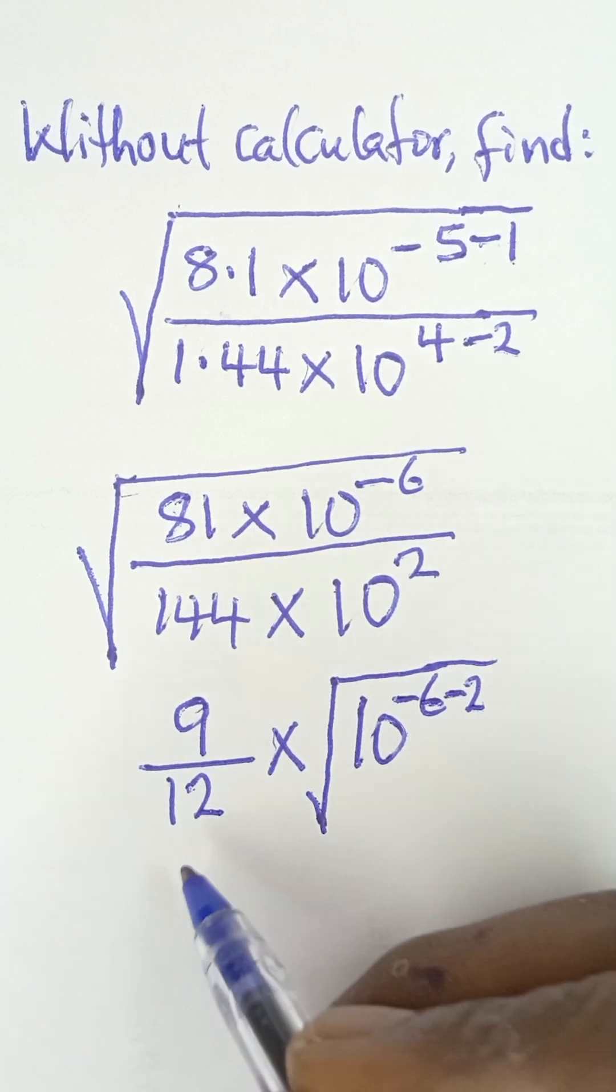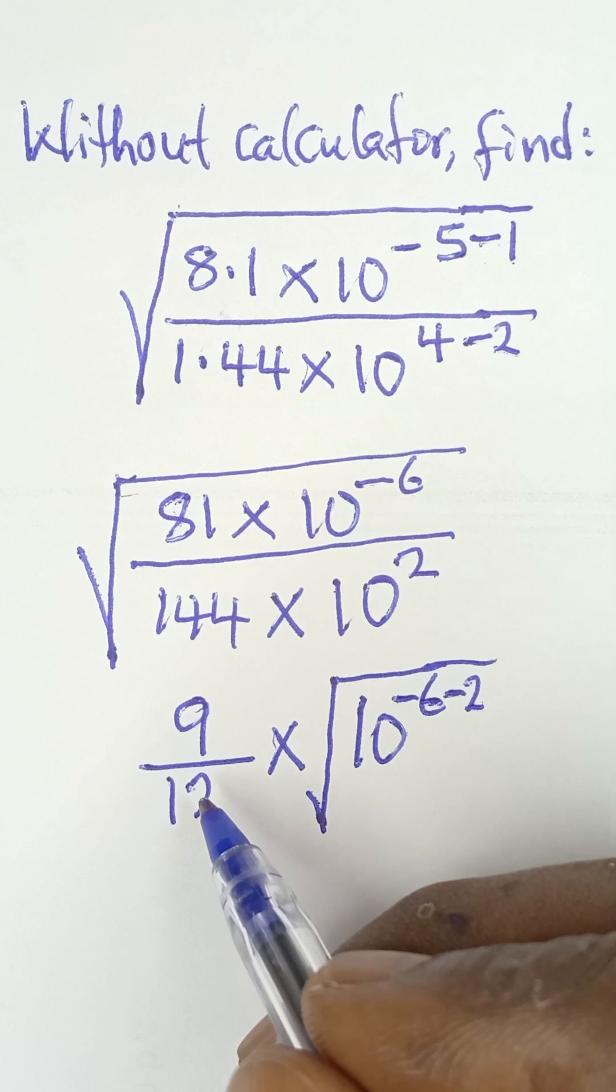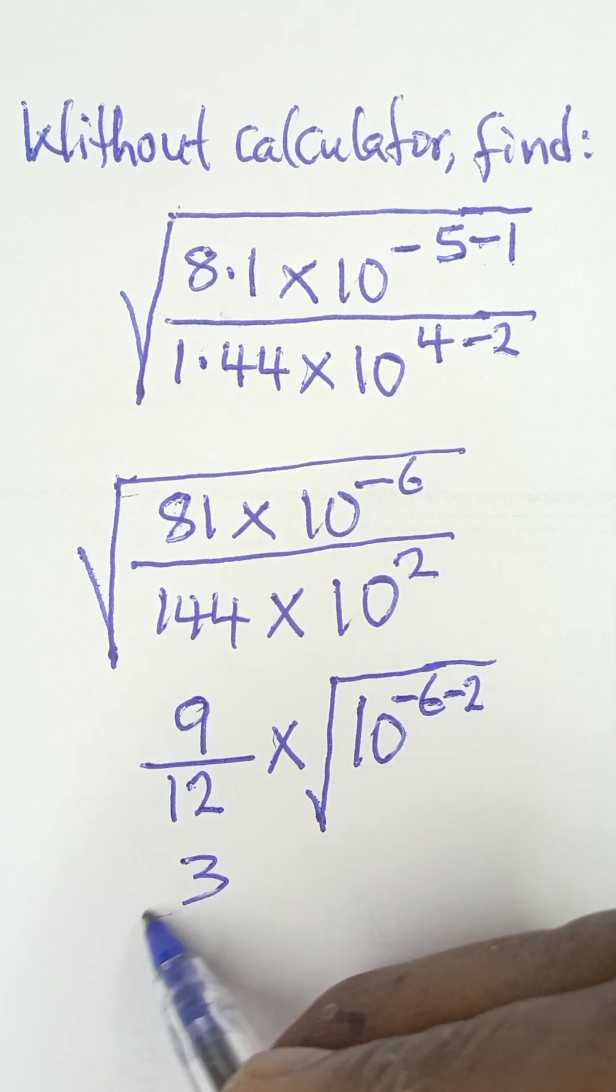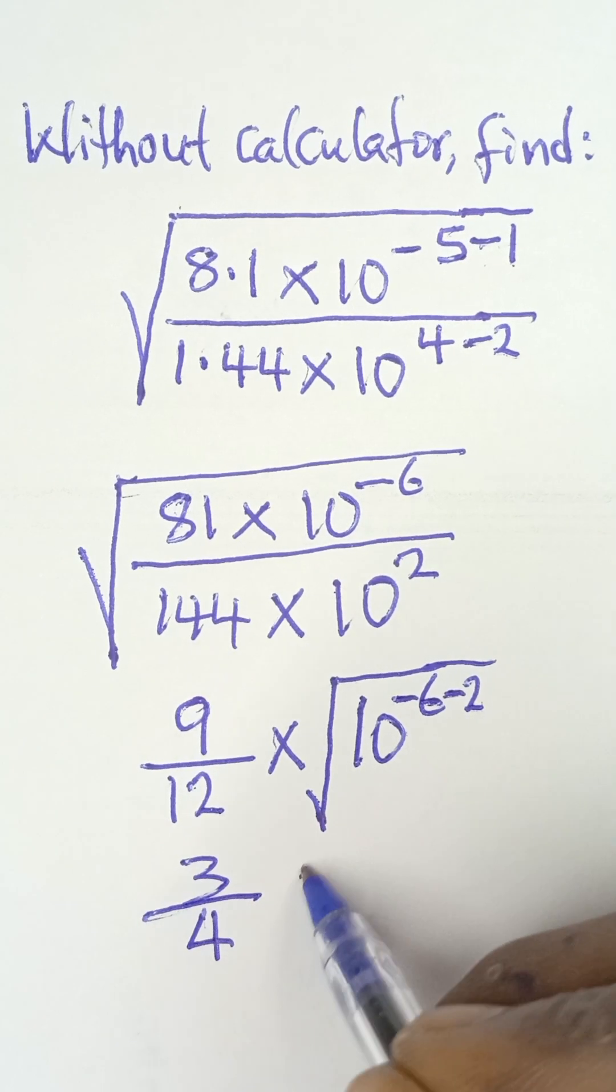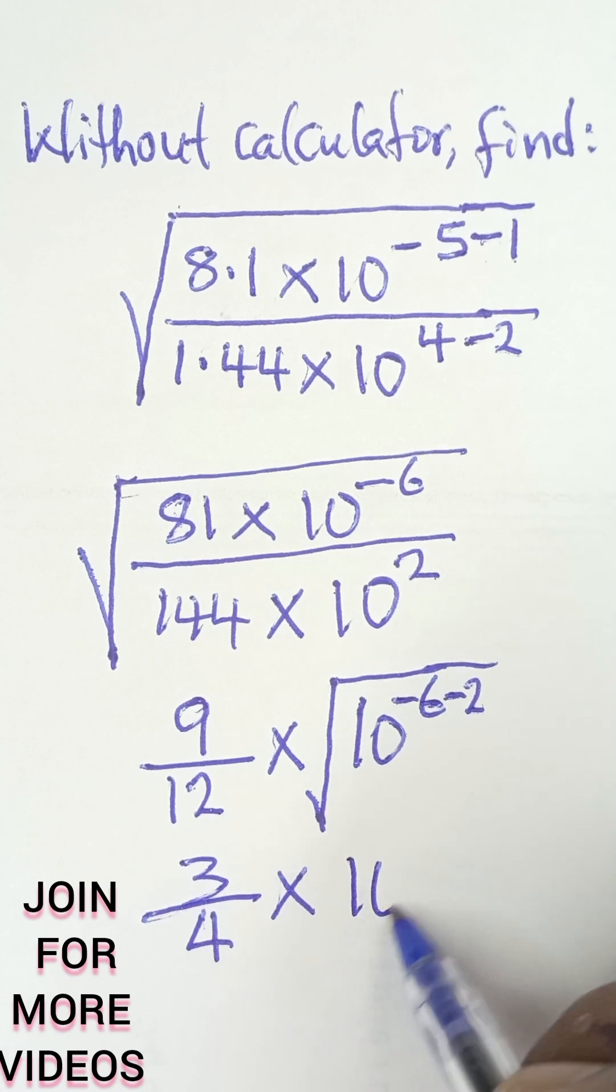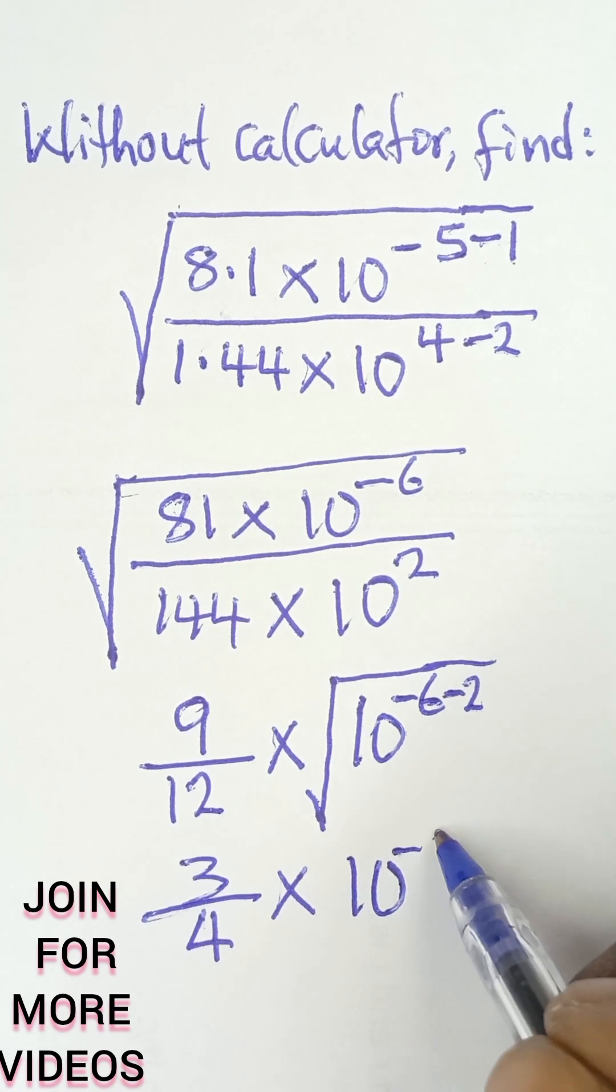So what I have there becomes 9 over 12, in its lowest form is 3 over 4, and then multiply by 10 raised to the power negative 8.